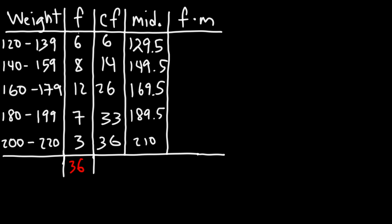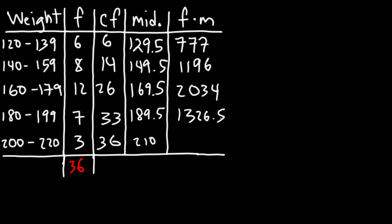Now let's multiply frequency by midpoint. 6 times 129.5 is 777; 8 times 149.5 is 1196; 12 times 169.5 is 2034; 7 times 189.5 is 1326.5; and 3 times 210 is 630. Taking the sum of this F×M column gives us 5963.5.